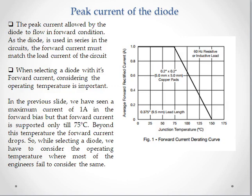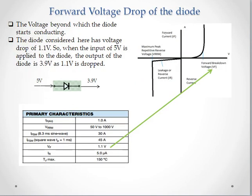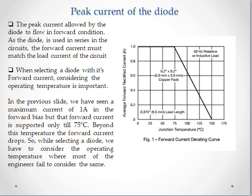In the previous webinar we stated that the maximum current possible through the diode is given by the characteristic called IF, which is the forward current. The specification shows a forward current of 1 amp. When you connect the diode in series — with the input, then the diode, and then the output load — the maximum current that the diode allows in series is 1 amp.